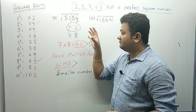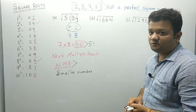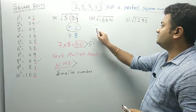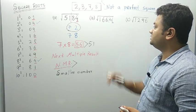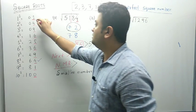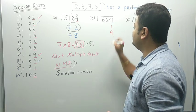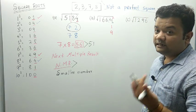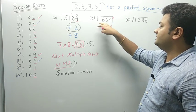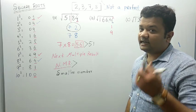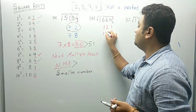I hope you understood. I am now explaining the same concept with the next example: 16641. Straight away go to the right-hand side and select two numbers: 41. What is in the unit space? We have 1 in the unit space. Now 1 comes in the square of 1 and in the square of 9. So we write 1 and 9. The rule of 41 is finished. The remaining number is 166. The square number which is less than 166 is 144, and square root of 144 is 12. So the square root is either 121 or 129.